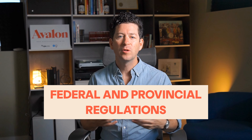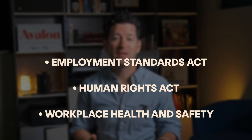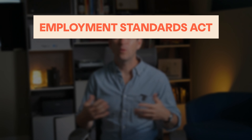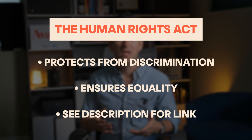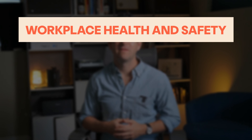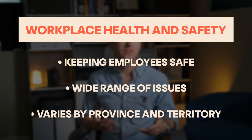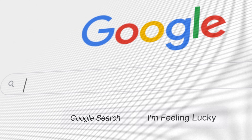You'll need to have a basic understanding of the federal and provincial regulations relating to employment in Canada. These laws govern how employers and employees interact. Key regulations include the Employment Standards Act, Human Rights Act, and laws about workplace health and safety. The Employment Standards Act sets out the minimum standards for things like hours of work, pay, vacation, and leaves of absence. You can find the various employment standards for each province and territory linked in the description below. The Human Rights Act, also linked below, protects employees from discrimination. It ensures everyone has an equal chance to work, regardless of things like their age, gender, or race. Workplace health and safety laws cover a wide range of issues from handling hazardous materials to preventing workplace violence. Each province and territory also has their own resources for this — search online to find the applicable workplace health and safety resource for your location.